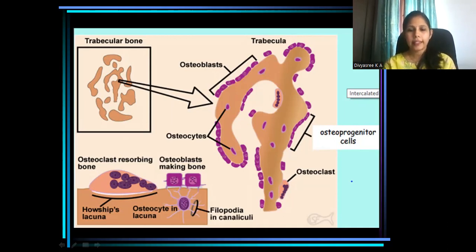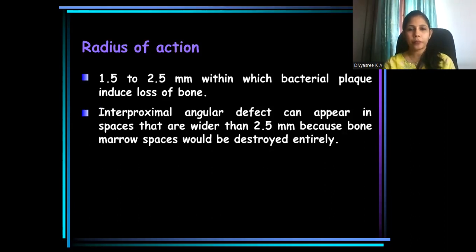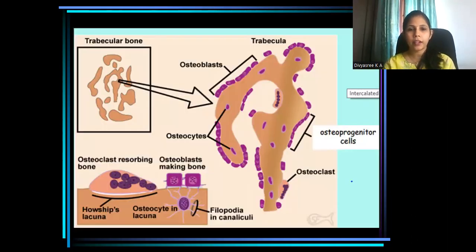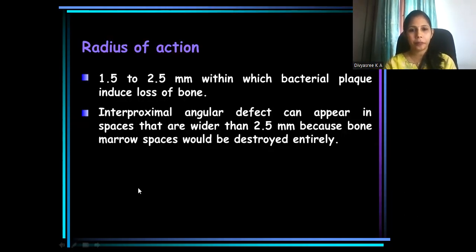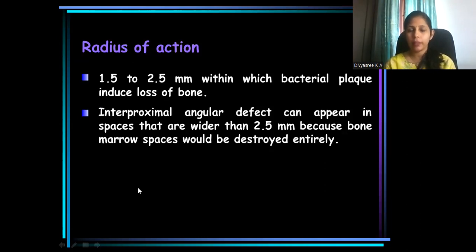From this area, osteoclasts produce enzymes and create an acidic environment for bone destruction. It has been found that the microbes present within the plaque have a particular area in which they can act and produce loss of alveolar bone.